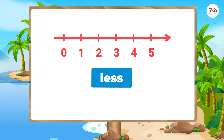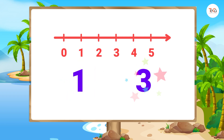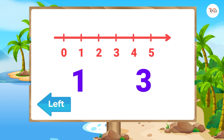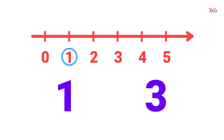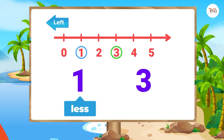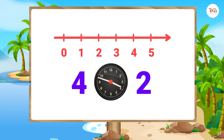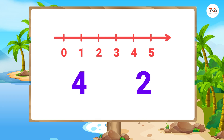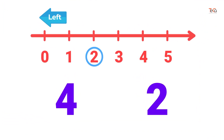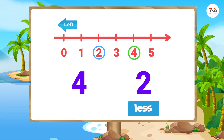Do you have your answer? To find the number that is less, just decide which number is to the left of the other on the number line. Here, number 1 is to the left of number 3, so 1 is less than 3. And 2 is less than 4.